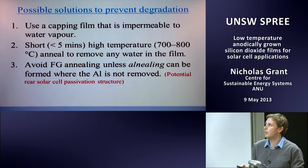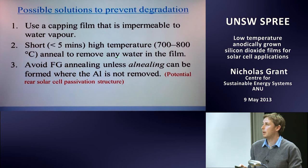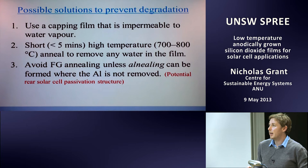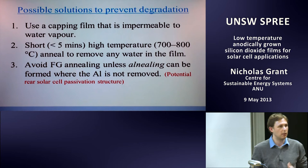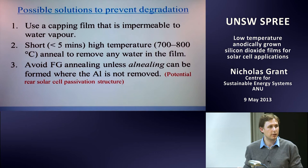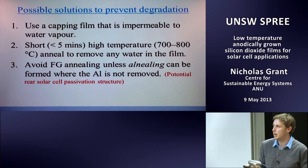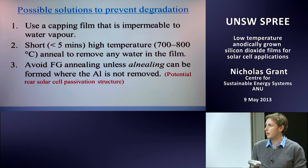Possible solutions to prevent degradation: use a capping film impermeable to water vapor, such as nitride; give a short high-temperature anneal to remove water from the film; avoid forming gas anneal; or do an alneal — depositing aluminium and annealing — which is known as the best way of introducing hydrogen to the interface. The alneal would be attractive as a rear solar cell passivation structure: grow the oxide, cap it with aluminium as a contact, and anneal. No removal of aluminium would be needed since it serves as the contact.